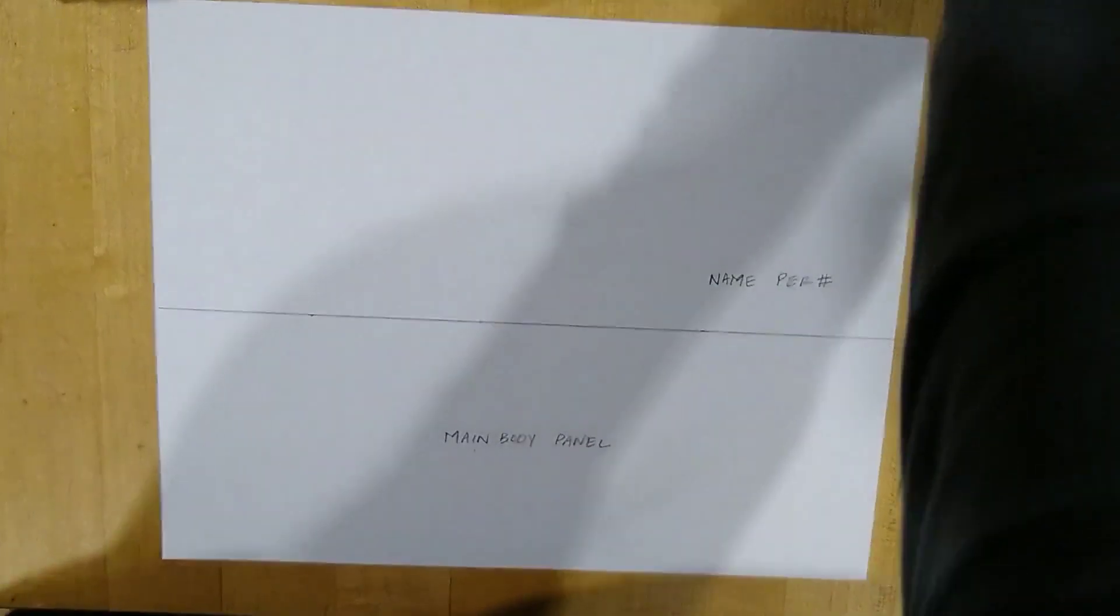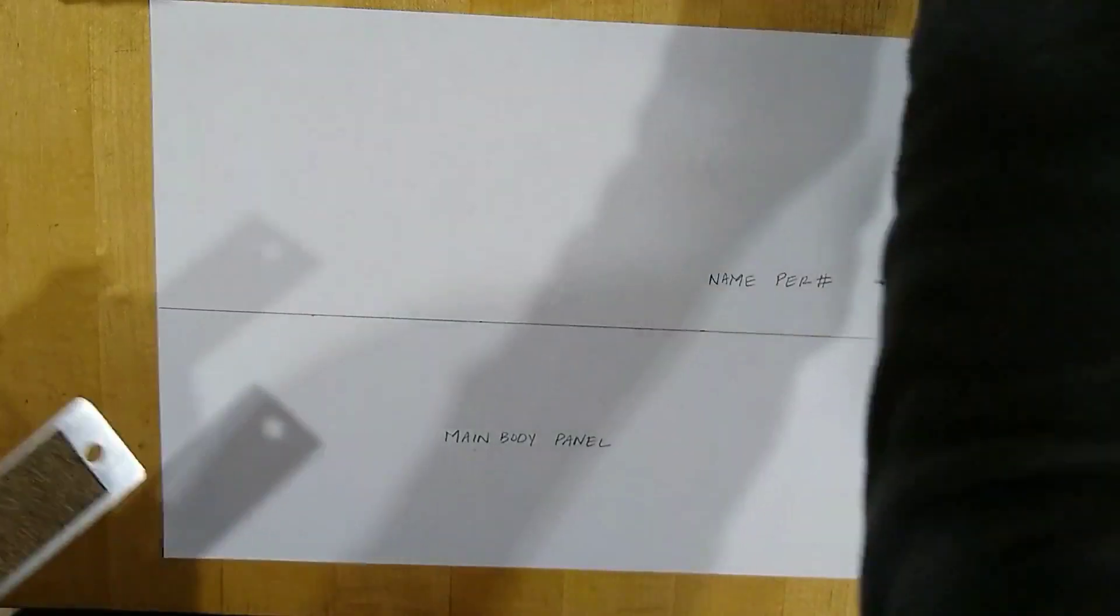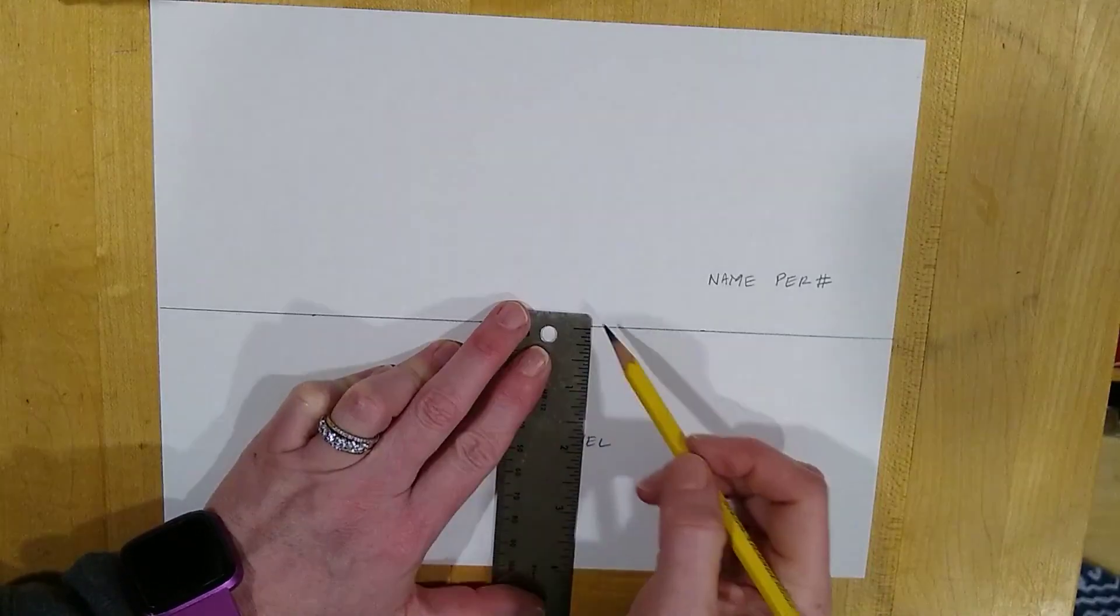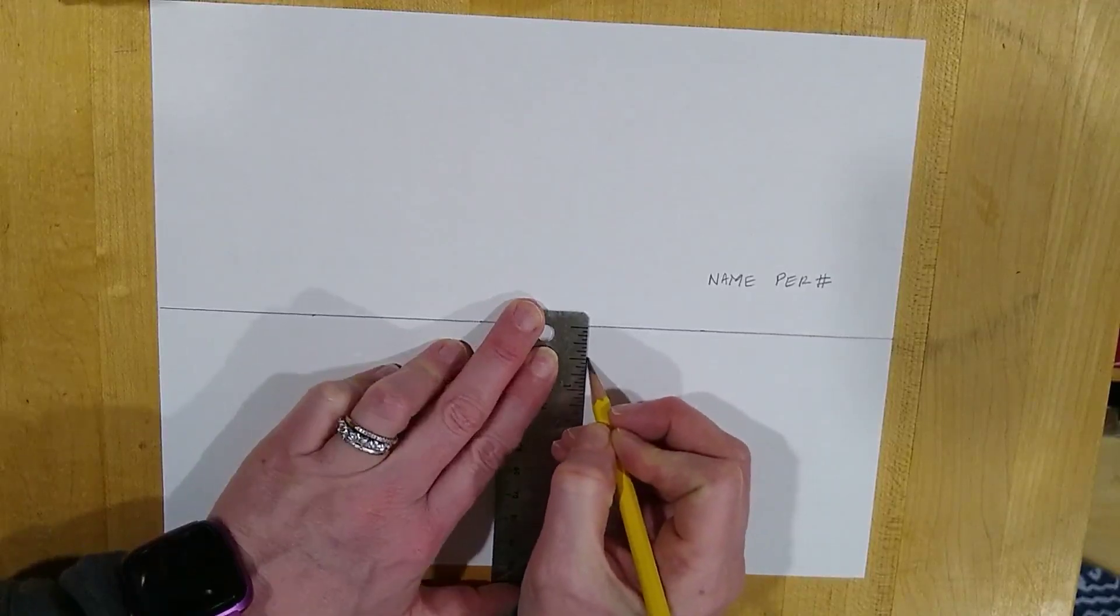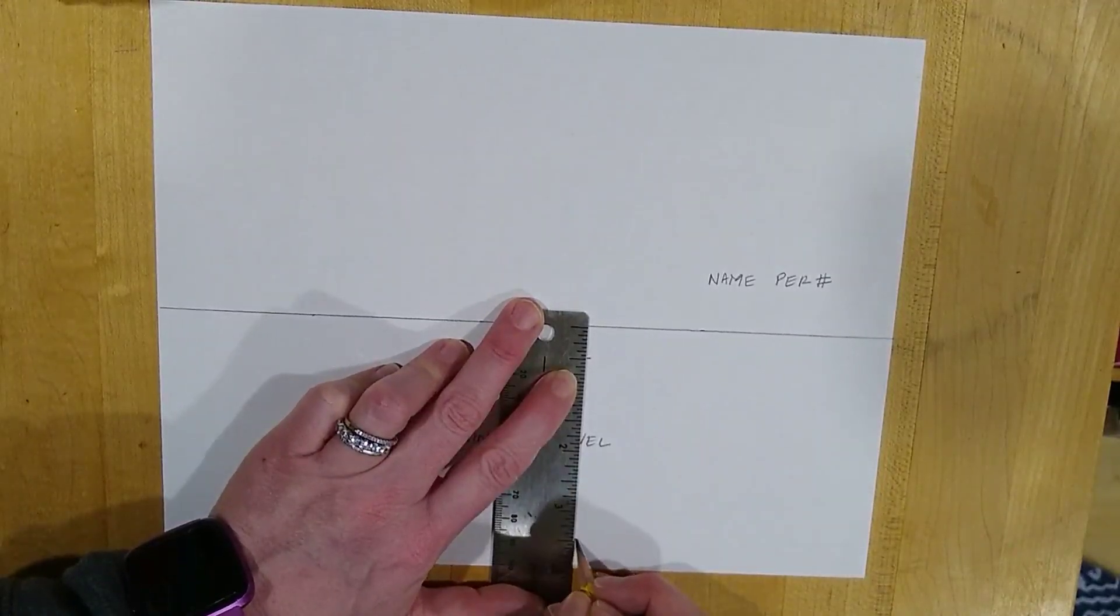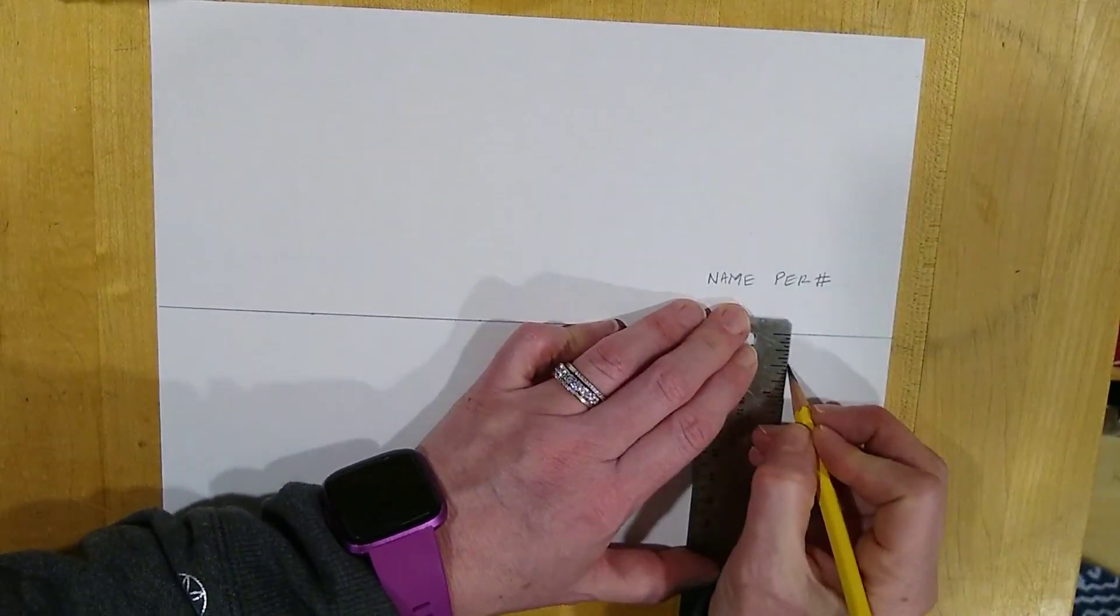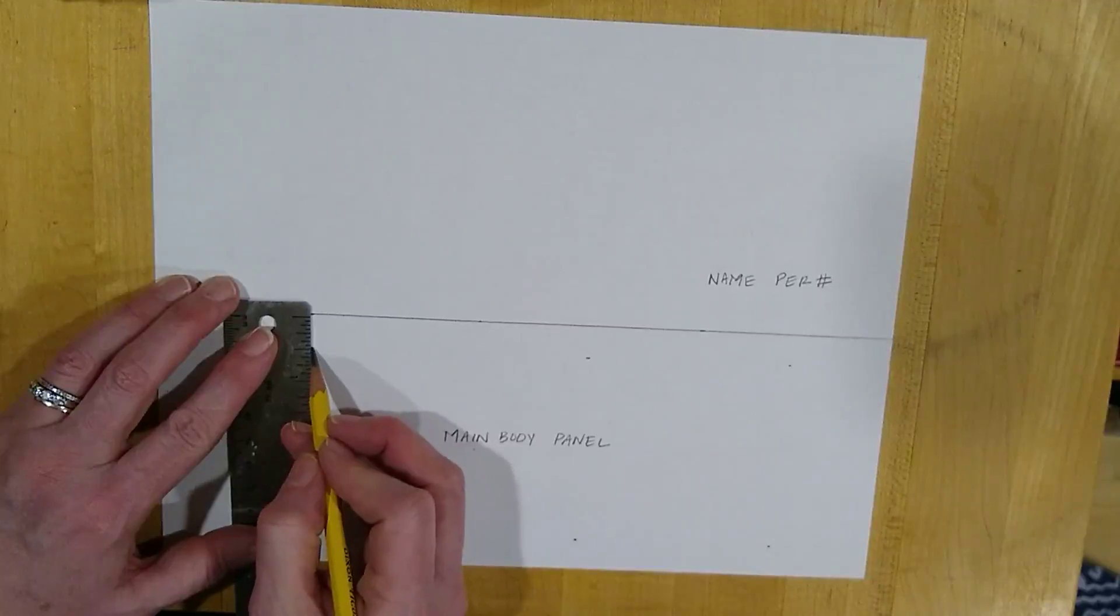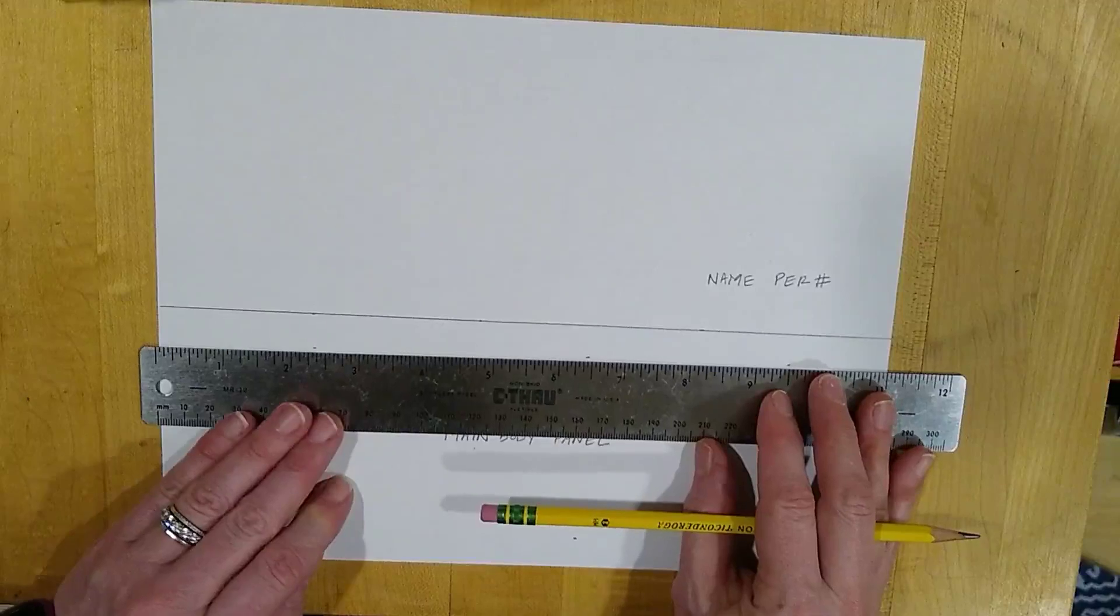Those dotted lines are half an inch away from each edge of the main body panel. So we are going to put our ruler back where it was, so it lines up with zero and four inches at the bottom. And then we're going to put a mark at a half an inch and three and a half inches. We're going to move it over here, put a mark at a half an inch and three and a half inches. And again, make sure you put your ruler at zero up here, half an inch and three and a half inches. And then we're going to put these lines in place.